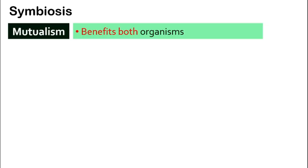First, mutualism. Mutualism is an interaction or a relationship that benefits both organisms that live together. Meaning they are both very happy.